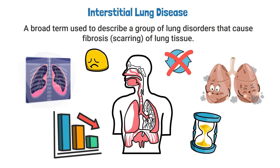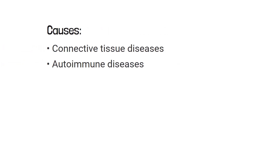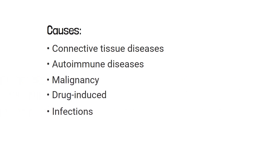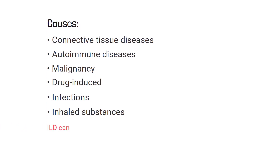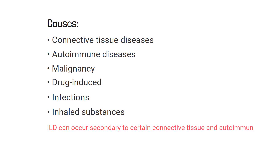Interstitial lung disease has several known and unknown causes. Some examples include connective tissue diseases, autoimmune diseases, malignancy, drug-induced causes, infections, and inhaled substances. It can occur secondary to certain connective tissue and autoimmune diseases such as